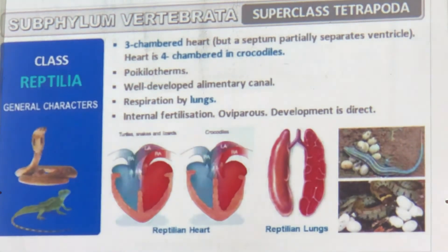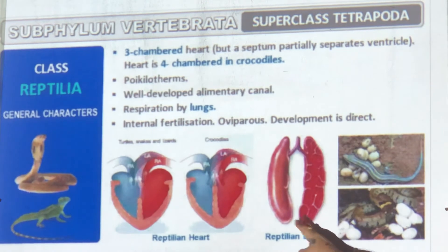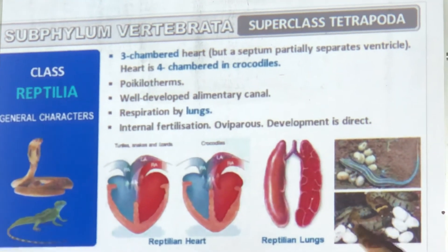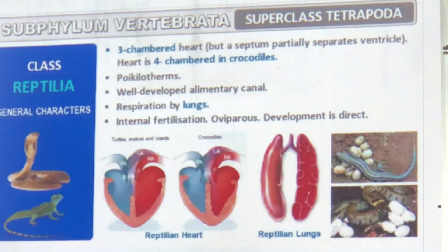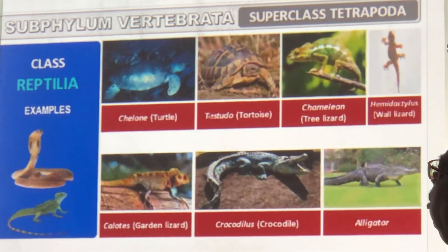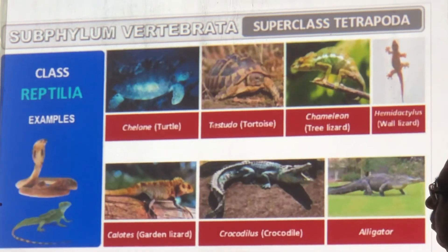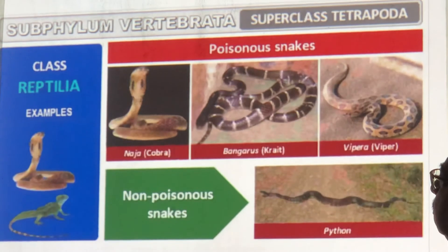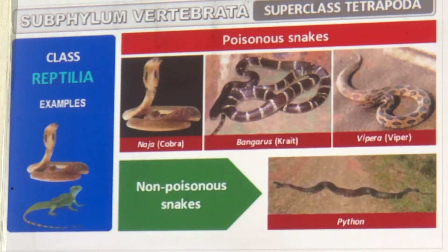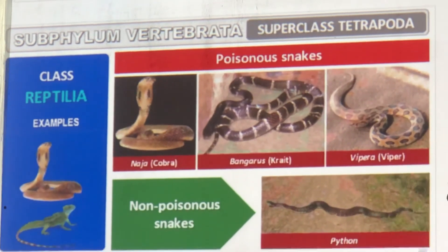Reptilia: only crocodiles have a four-chambered heart. They are cold-blooded. The alimentary canal is well developed and lungs are present. Fertilization is internal. Reptilian lungs are simpler than mammalian lungs. They lay eggs — for example, snakes lay eggs. Examples: turtle, tortoise, tree lizard, chameleon, wall lizard, Calotes (garden lizard), crocodile, alligator, Naja naja (cobra), Bungarus (krait), Vipera, and Python. There are two types — poisonous and non-poisonous.